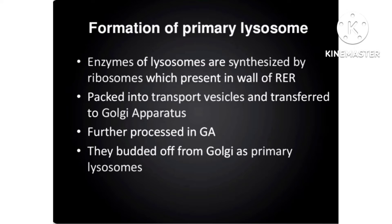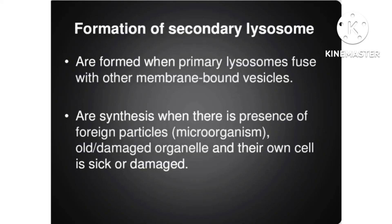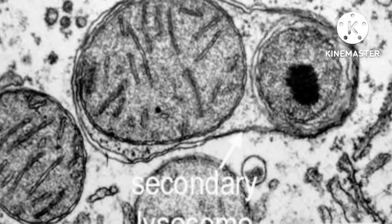The first form is known as primary lysosomes. Enzymes of lysosomes are synthesized in the endoplasmic reticulum, then transferred to the Golgi apparatus, where they are processed and bud off as a primary lysosome. The primary lysosome then combines with the endosome to form the secondary lysosome, which is the active lysosome formed when a primary lysosome fuses with another membrane-bound vesicle. When primary lysosomes combine with endosomes containing foreign particles, it is also known as a phagosome or digestive vacuole.